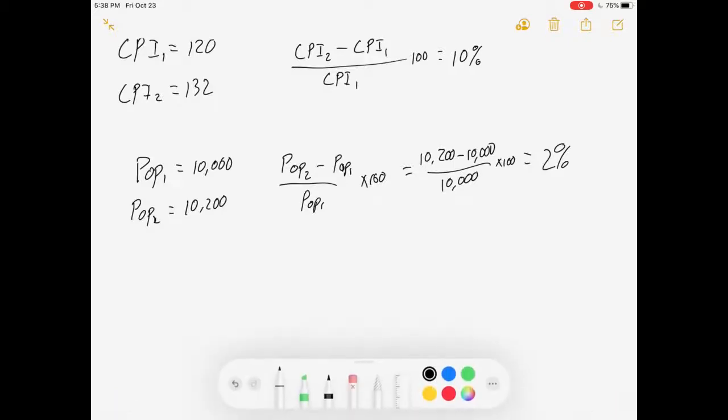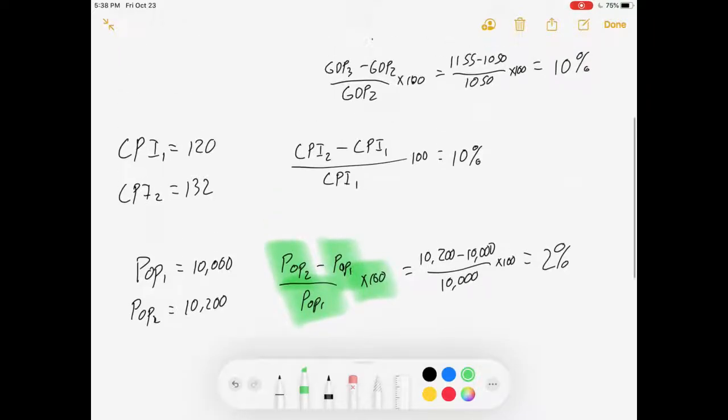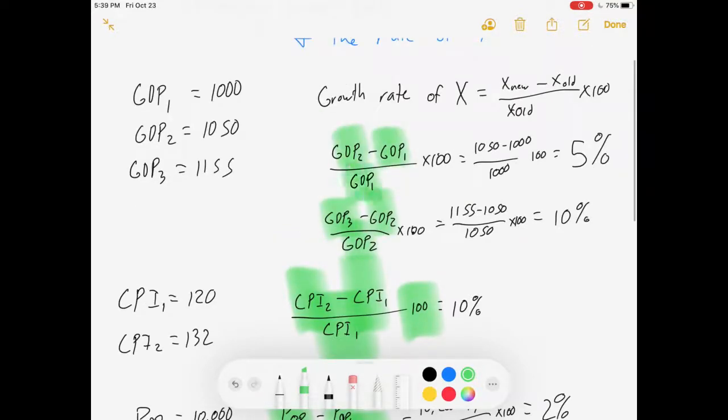That's going to come out to be 2%. All right, pretty repetitive. It's the same structure every time. New minus old over old times 100. New minus old over old times 100. It's all the same thing.